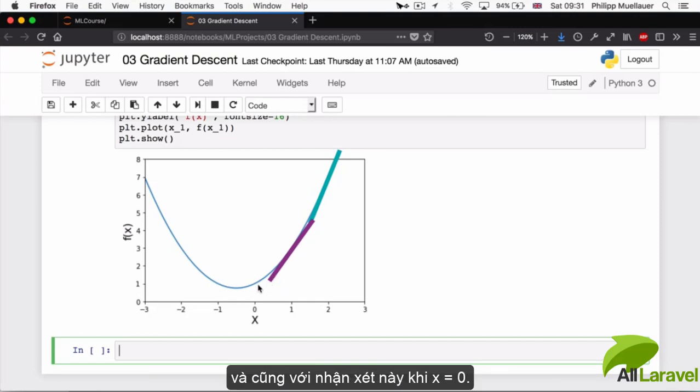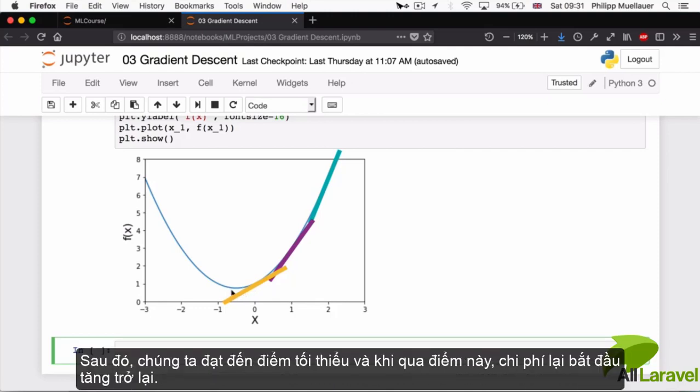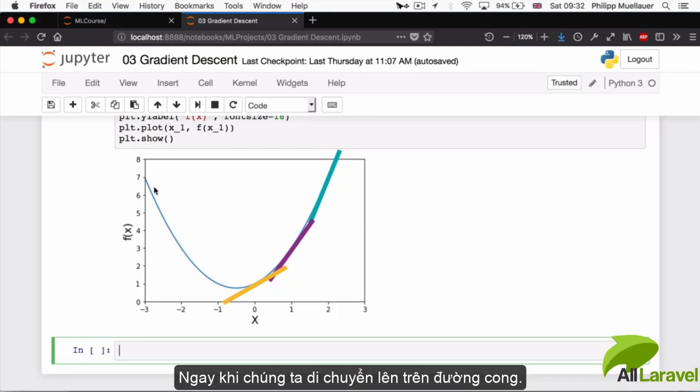And by the same token, when x is equal to 0, that line is flattening out even more. So at this point the cost is only decreasing very, very slightly. Then we reach our minimum and then the cost starts increasing again, as we move up the curve.